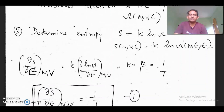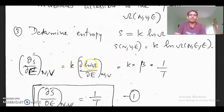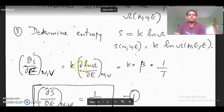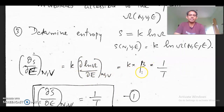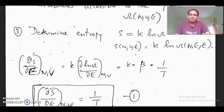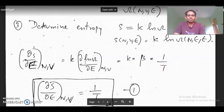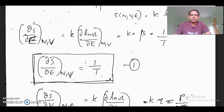If entropy is known to us, we have S equal to k log omega, so ∂S/∂E equals k times ∂(log omega)/∂E. Now ∂(log omega)/∂E is beta, which is 1/kT. So k cancels and we have 1/T. This is the fundamental equation of thermodynamics: ∂S/∂E equals 1/T. Once we know S, we can determine the temperature.